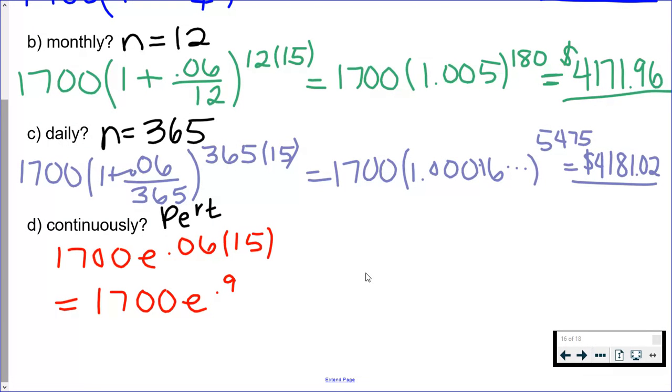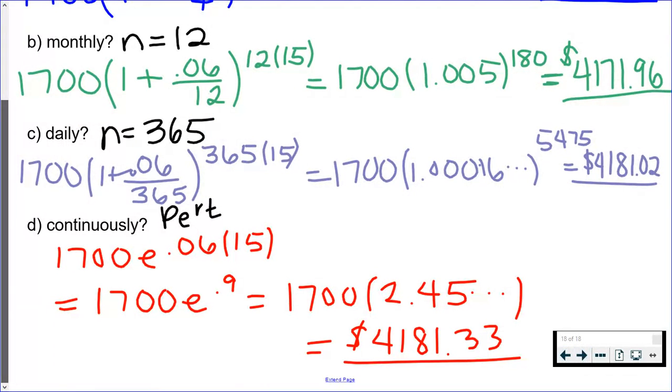you have, you're either going to hit 0.9 and then the e button, or you're going to hit the e button and then 0.9. Different calculators have it in a different sequence, but you're finding e to the 0.9 power. And then once you have that number, which is about 2.45, do not clear it—that's why I have those dots after it. Multiply by 1700, and you should have an answer which is very similar to Part C, just a few cents off.